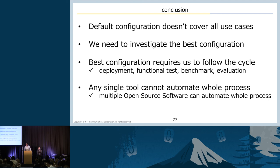In conclusion, we learned four things via this project. First, the default configuration of OpenStack does not cover all use cases, so we need to investigate the best configuration for each case. The best configuration requires us to follow the cycle — deployment, functional test, benchmark, and evaluation — again and again. And no single tool can automate the whole process, but we showed that multiple open source software tools can automate the whole process.